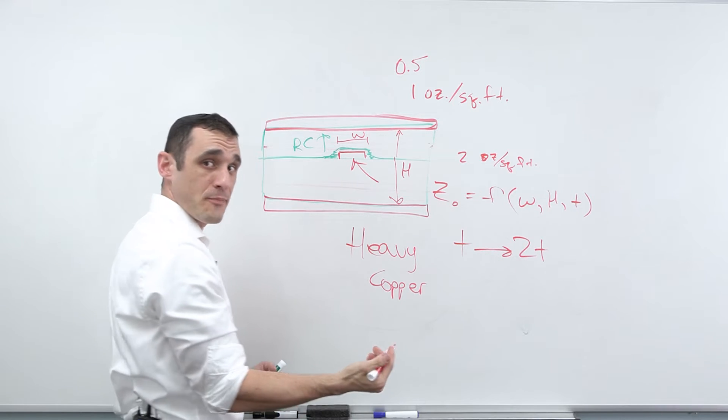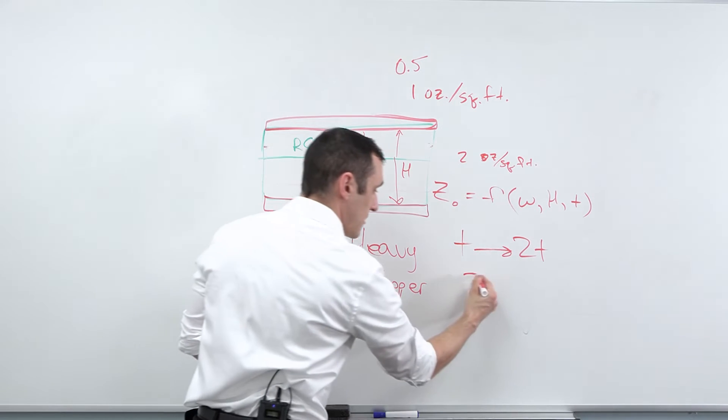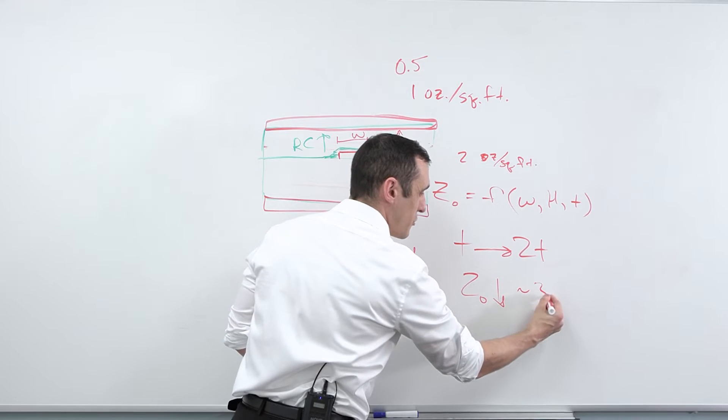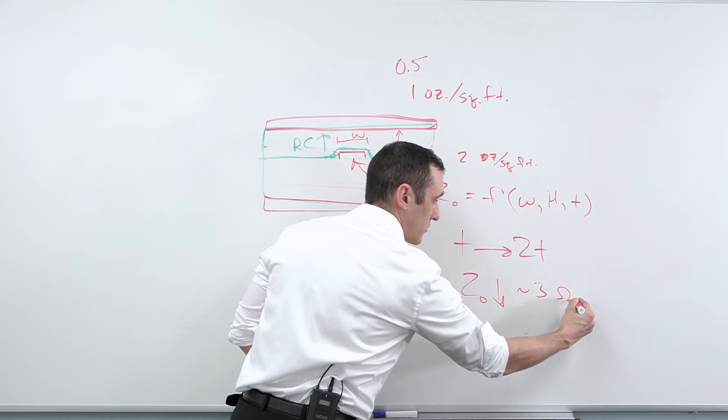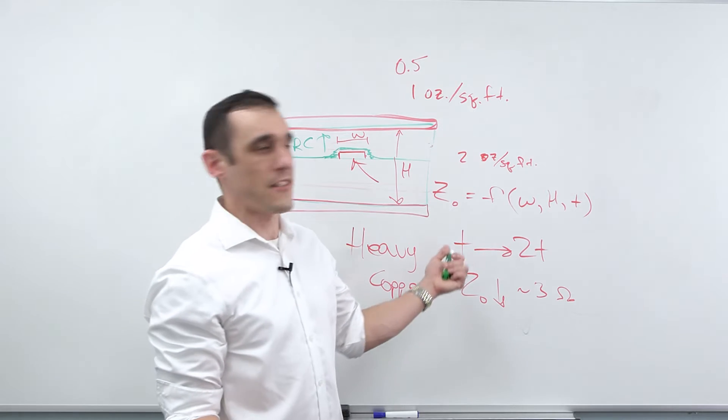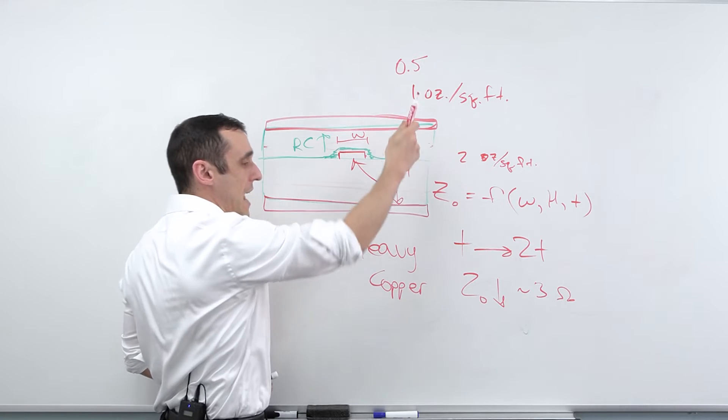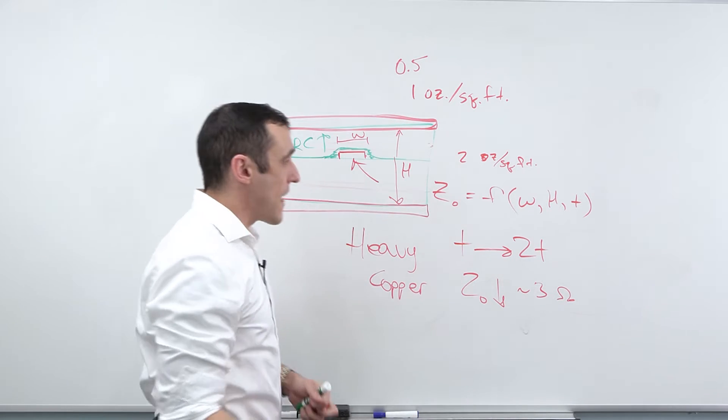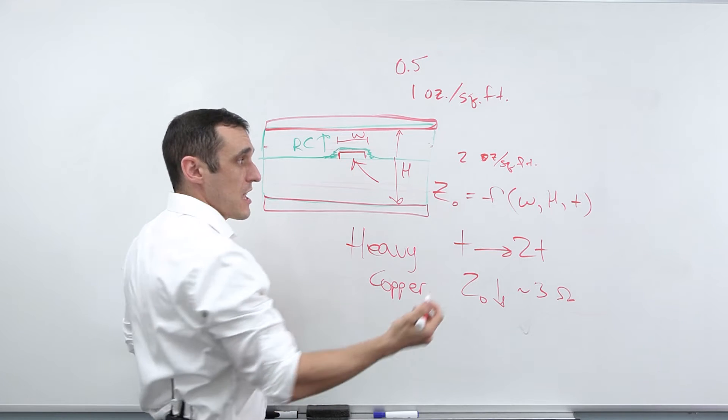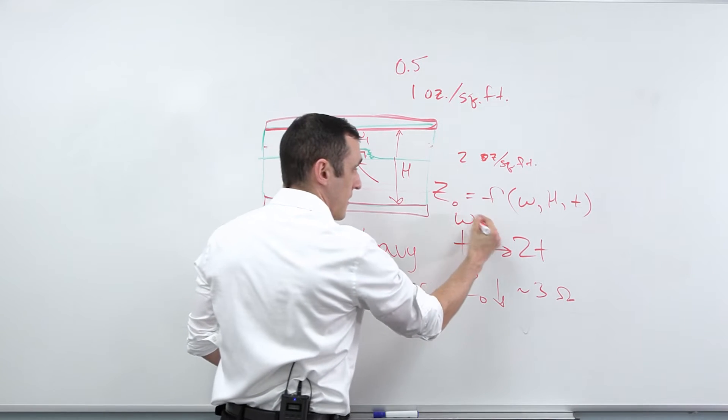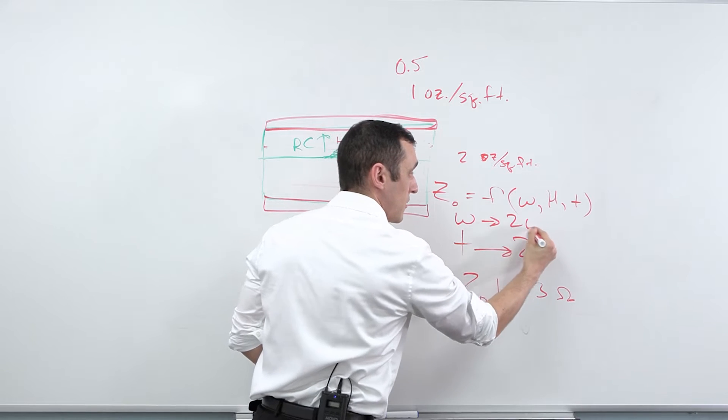Your impedance depends on the width, the distance between the planes and the thickness of your copper. The thickness is actually very, has a very weak influence on the impedance. You can actually like take the thickness and double it, go to 2T, and it's only going to decrease Z₀ by like, I don't know, a few ohms. Let's call it three ohms or so. That's just an estimate. The point is that it's a very small change. So going from half ounce to one ounce is not going to have a huge effect.